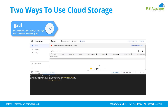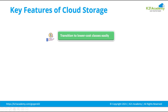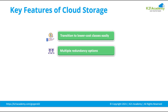Now let us talk about some features of the cloud storage. Transition to lower cost classes easily — configure your data with object lifecycle management to automatically transition to lower cost storage classes where it meets the criteria you specify. Multiple redundancy options — cloud storage has an ever-growing list of storage bucket locations where you can store your data with multiple automatic redundancy options.